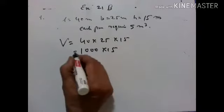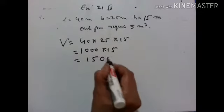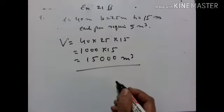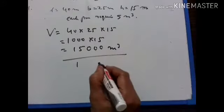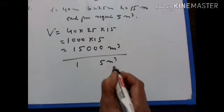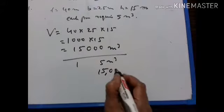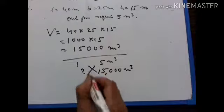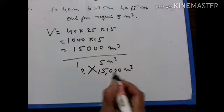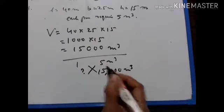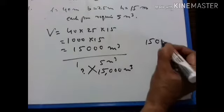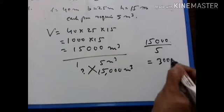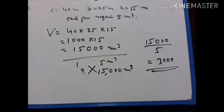The volume of the room is 15,000 meter cube. If one person requires 5 meter cube of air, then in 15,000 meter cube how many persons can be accommodated? 15,000 divided by 5 is equal to 3,000. So 3,000 persons can be accommodated.